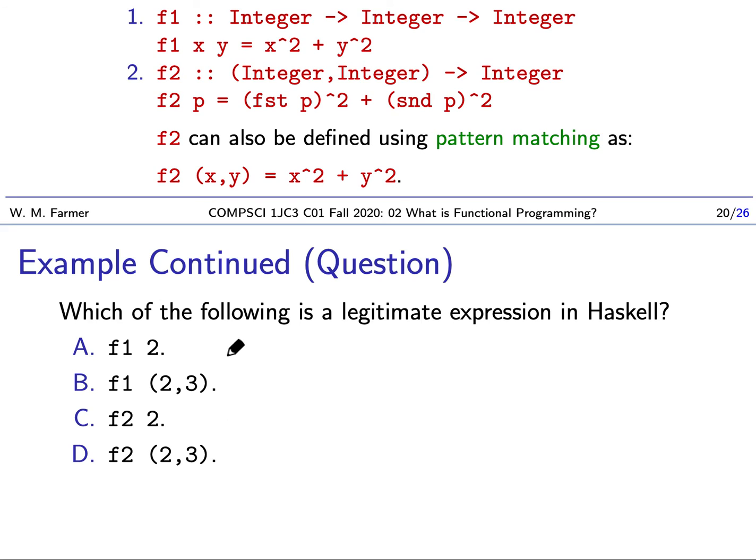Welcome back. f1 takes an integer and we're giving it an integer, so f1 2 is legitimate. f1 (2,3) takes a pair but f1 expects an integer - this is not legitimate due to a type error. f2 2 gives an integer but f2 expects a pair - also a type error. f2 (2,3) gets a pair of integers as expected, so this is legitimate. A and D are legitimate expressions; B and C involve type errors.